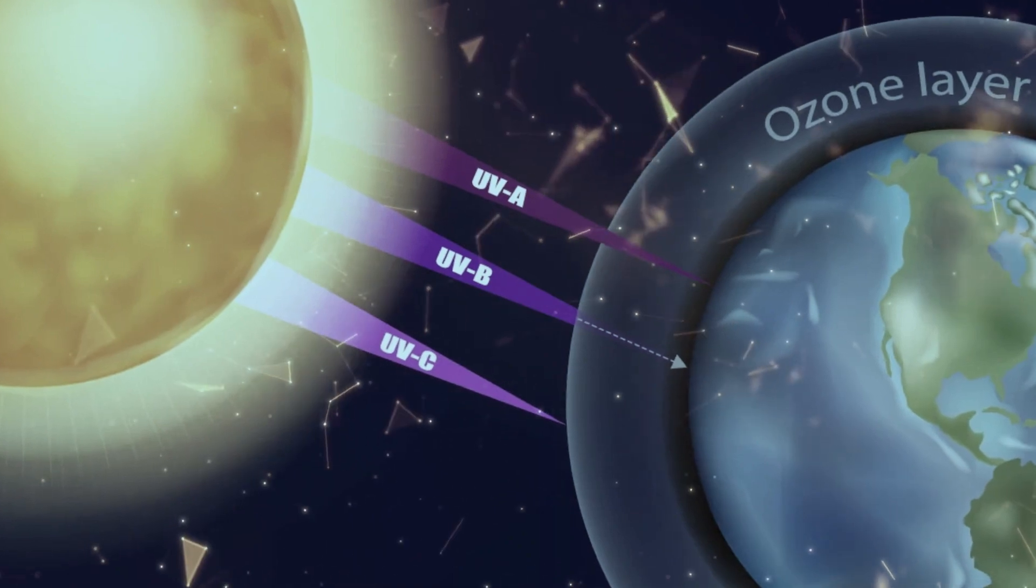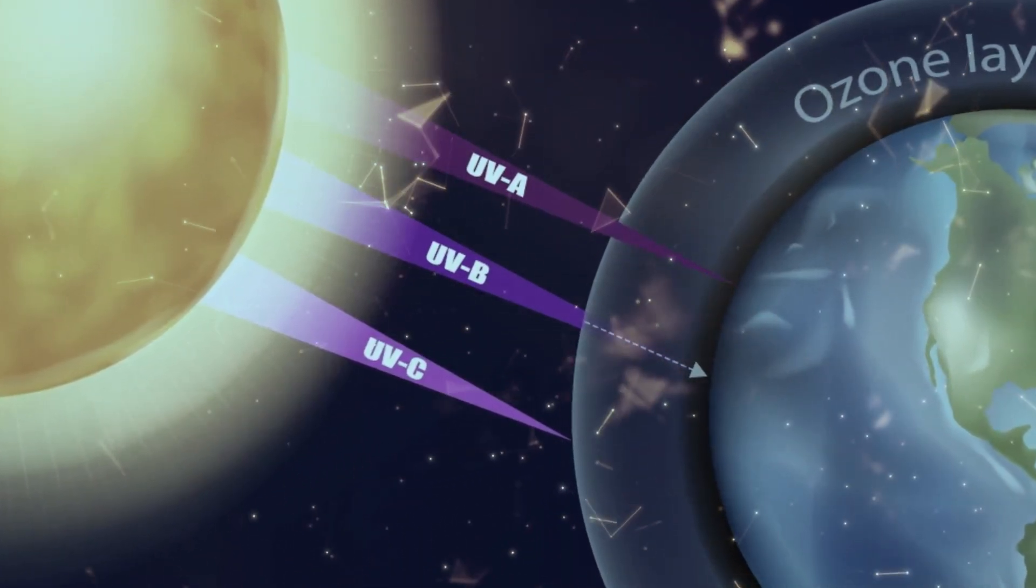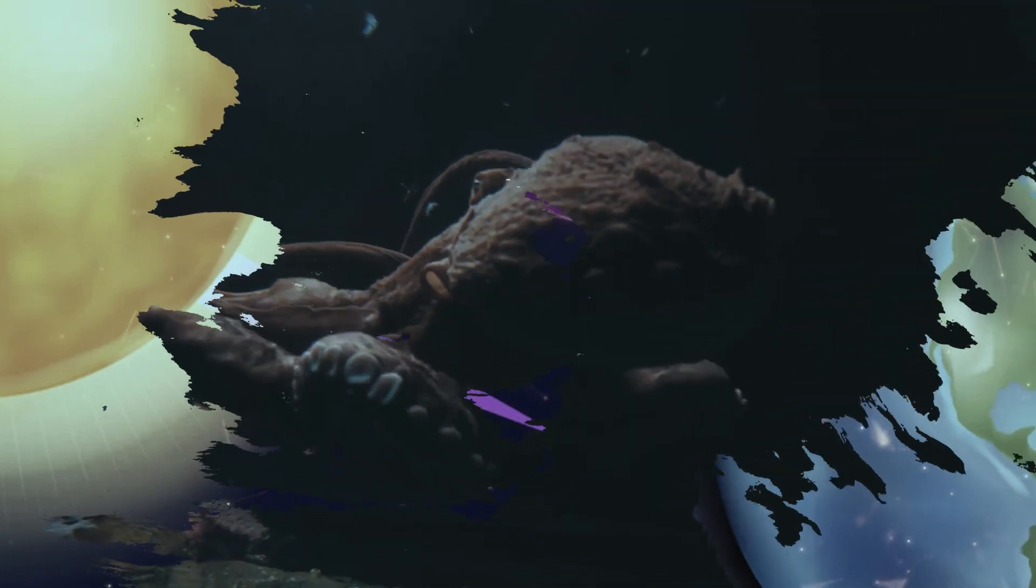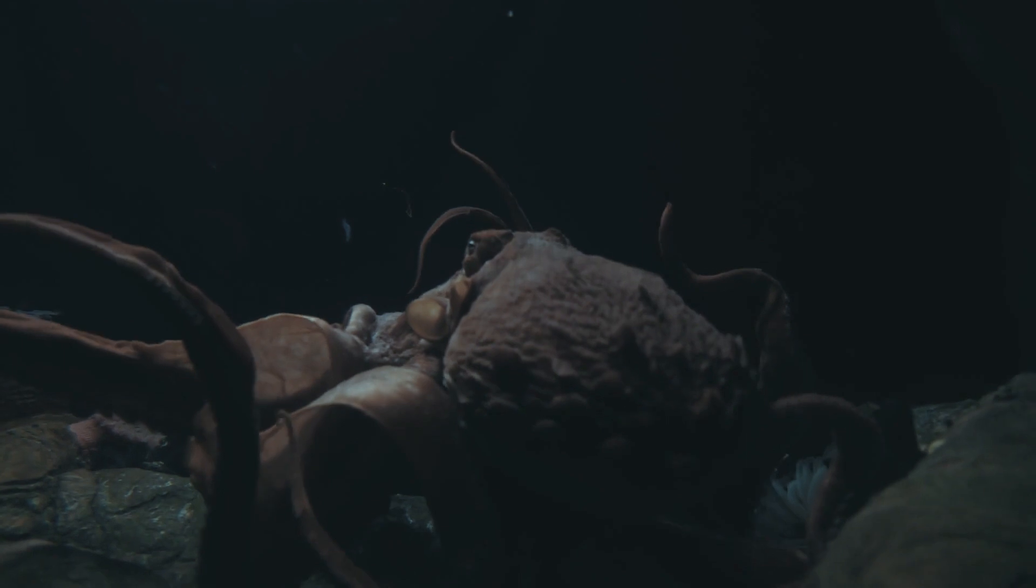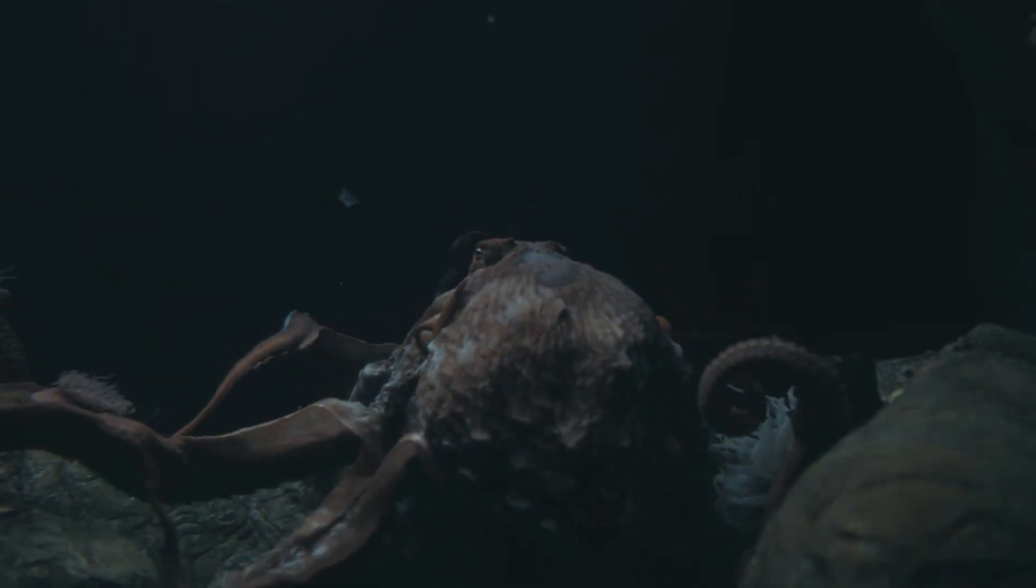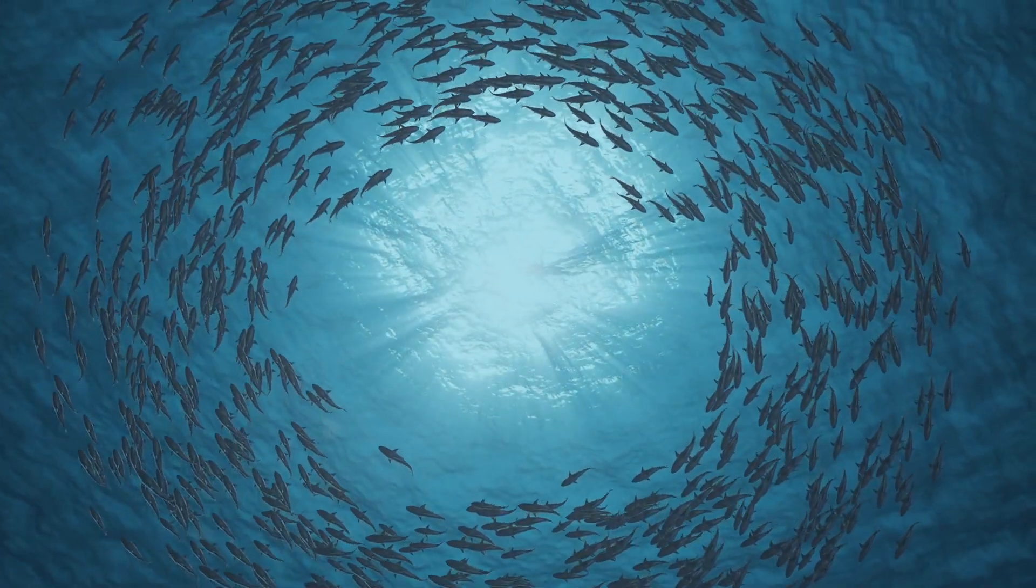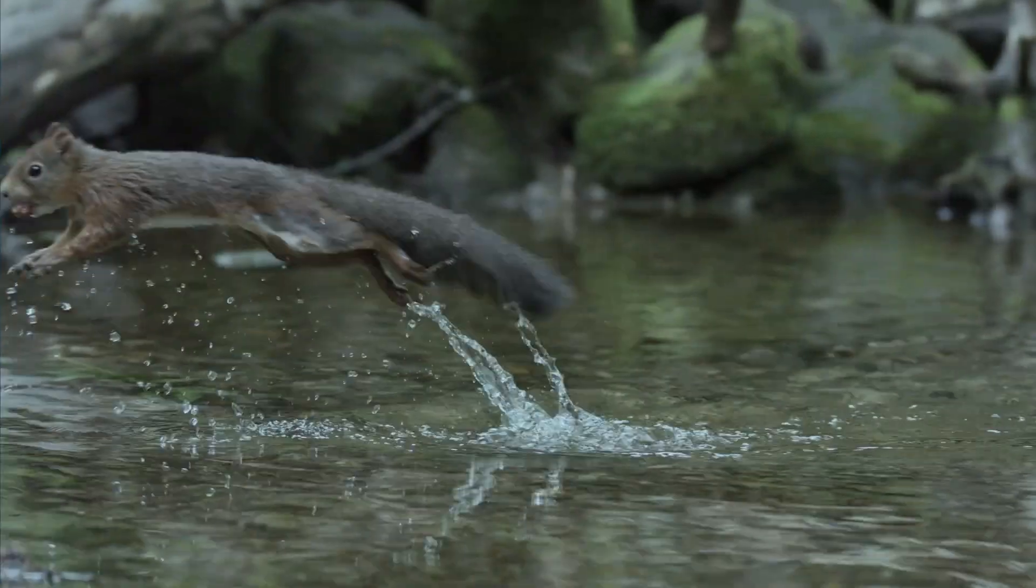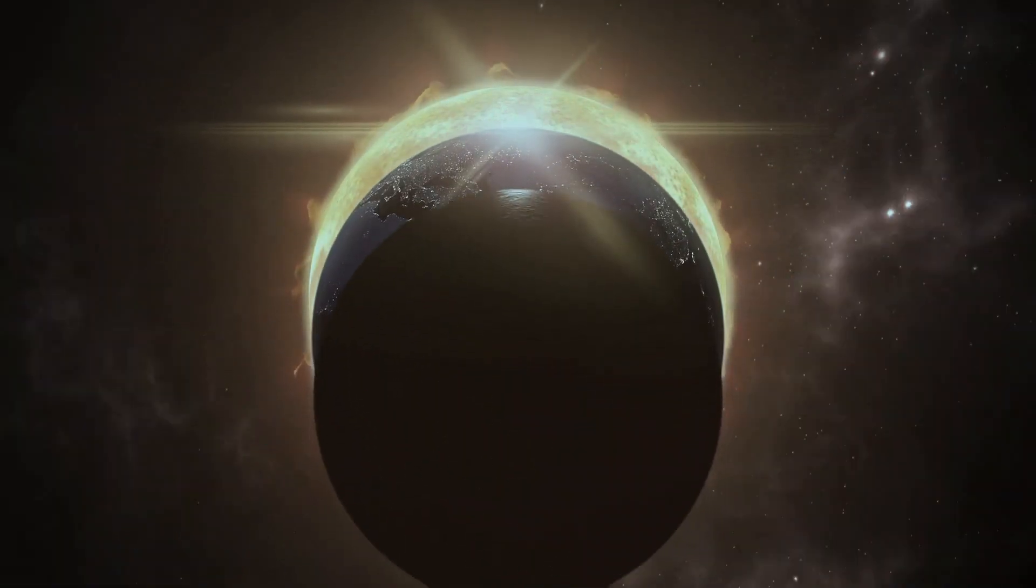Diving into the evolution of the ozone layer, we see it as Earth's natural sunblock. Formed 600 million years ago, this layer was pivotal for early marine life, which remained deep within oceans to evade the sun's harmful rays. The development of the ozone layer was, in many ways, a game-changer. It provided a safeguard, paving the way for life to thrive in shallower waters, and eventually, on land. This transition was, undoubtedly, a significant evolutionary leap.